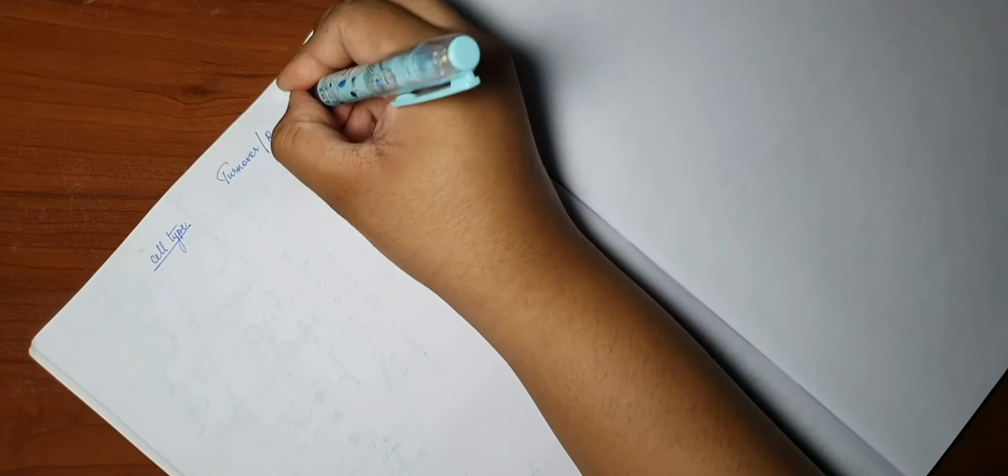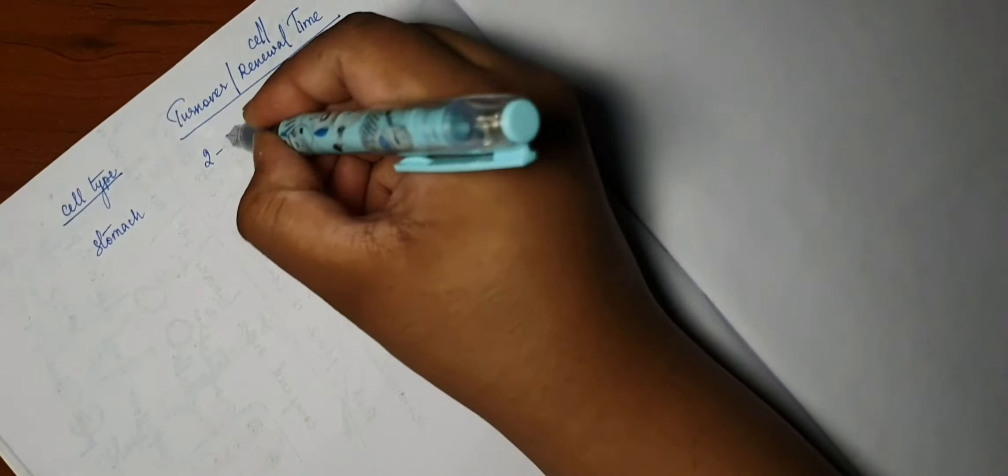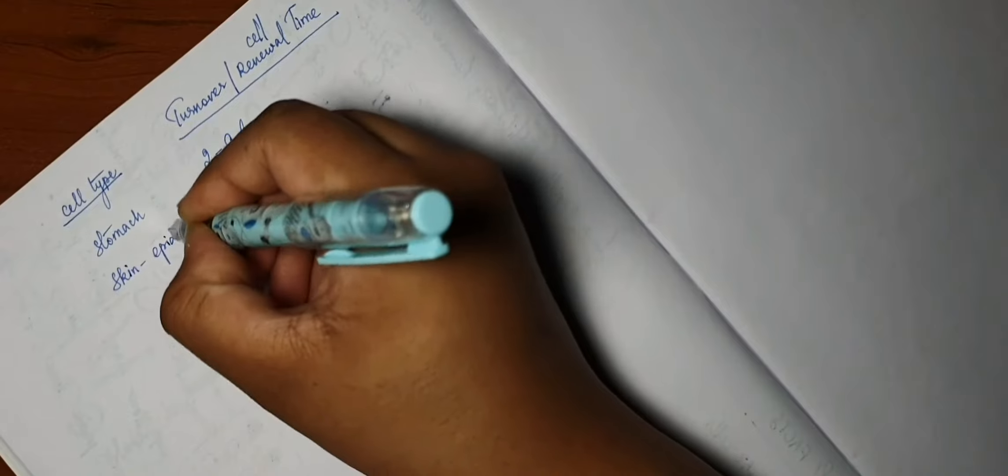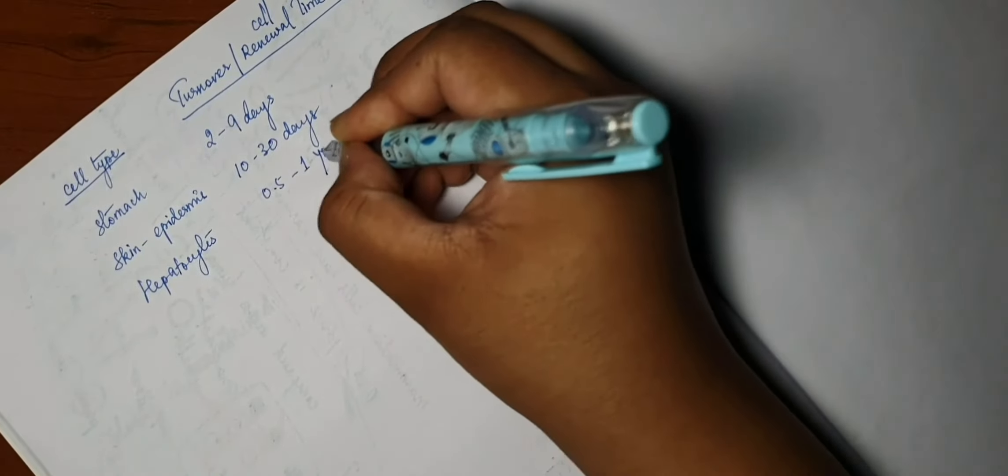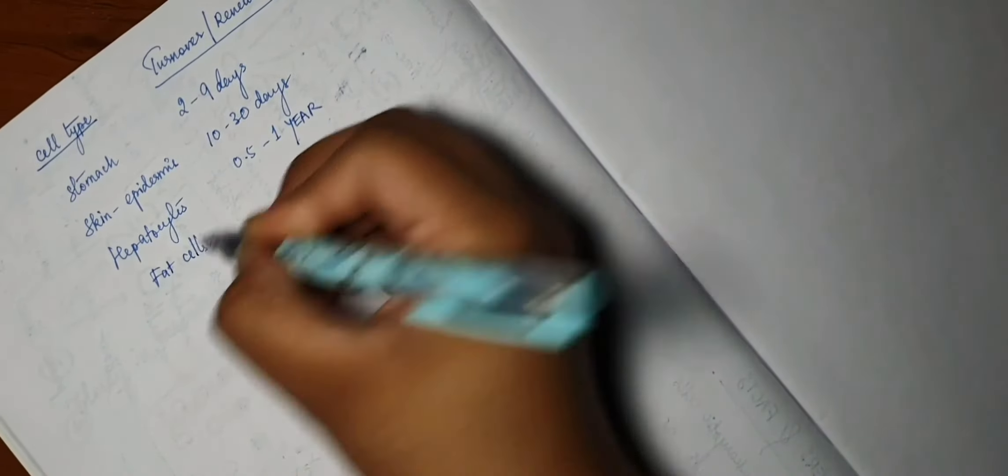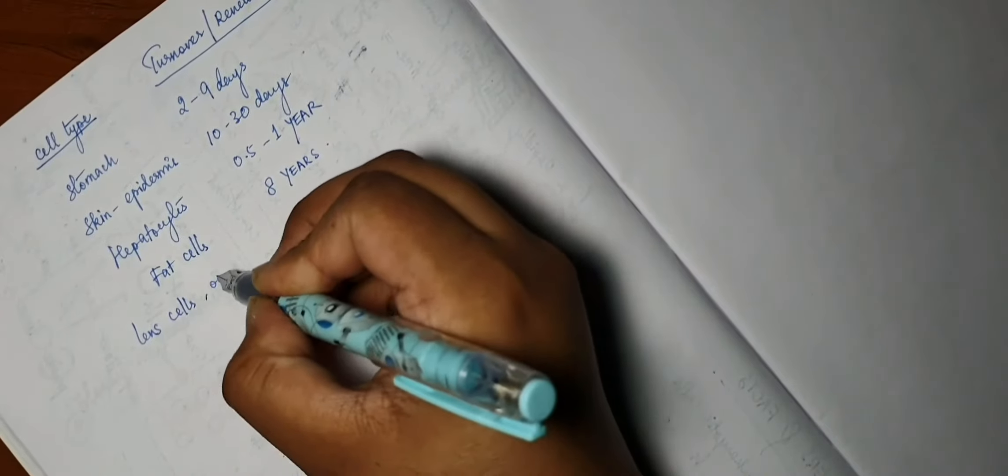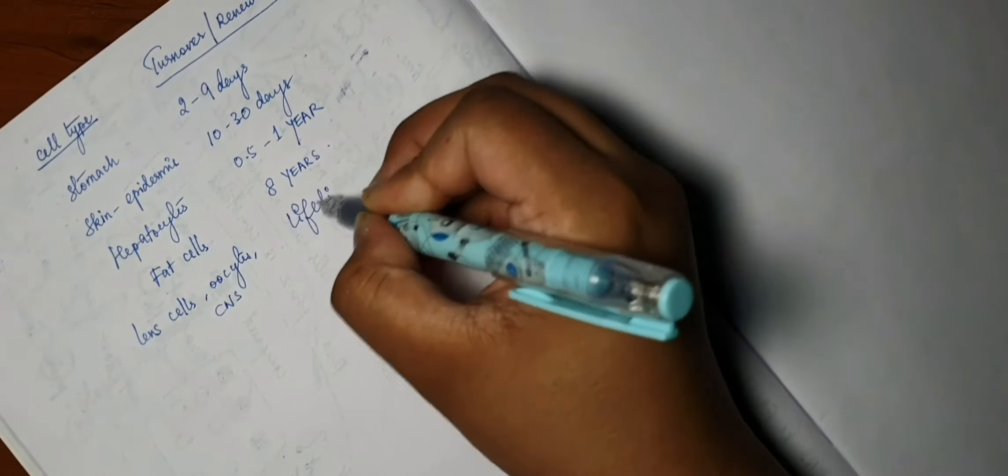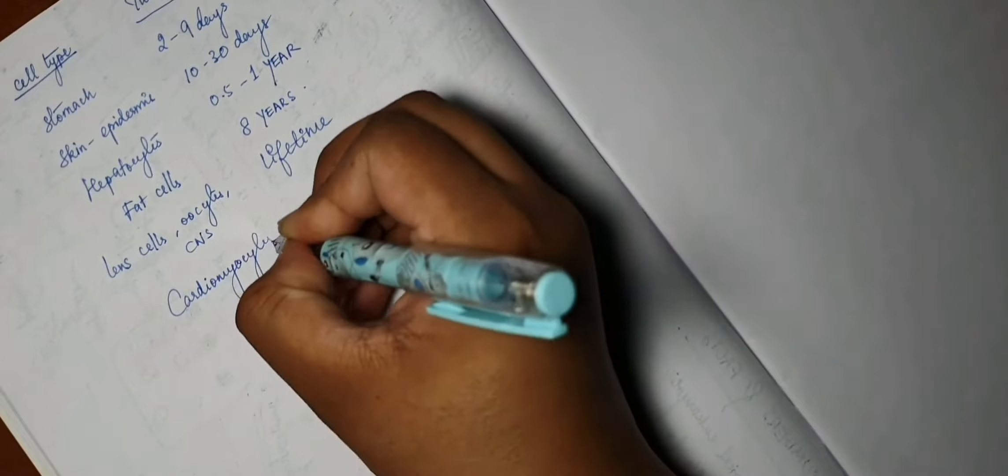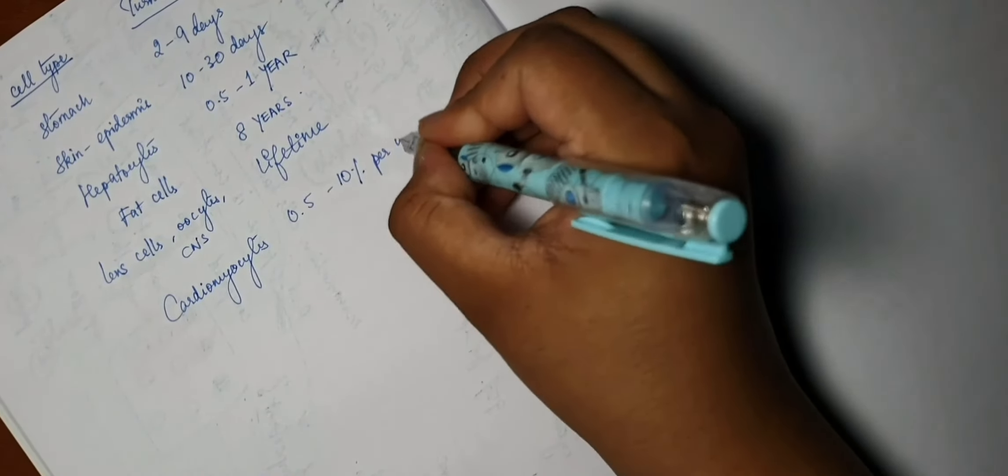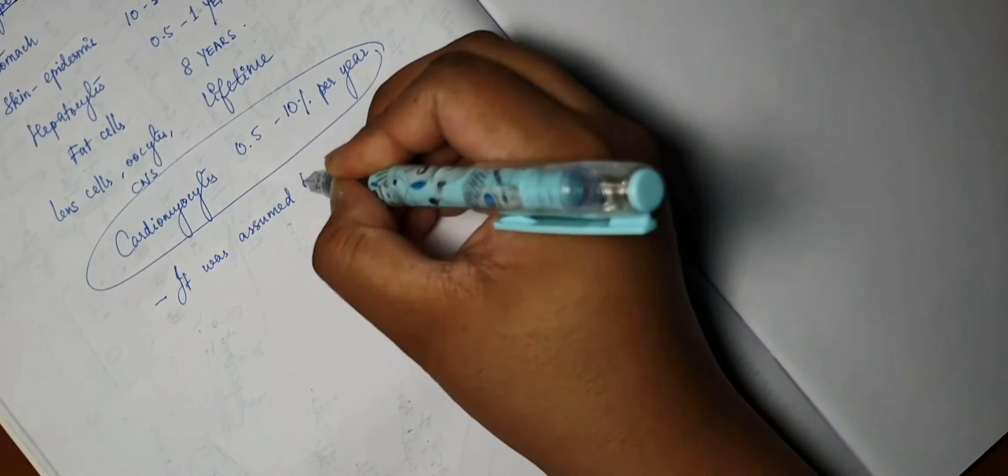And I wanted to mention something here about cell types and the cell renewal time. In the stomach, it takes about two to nine days for cell turnover. In the epidermis of the skin, it's about 10 to 30 days. Hepatocytes take 0.5 to 1 year. Fat cells renew after eight years. And lens cells, oocytes, and CNS cells, they have no turnover. They exist for a lifetime. With cardiomyocytes, their turnover time is 0.5 to 10 percent per year.